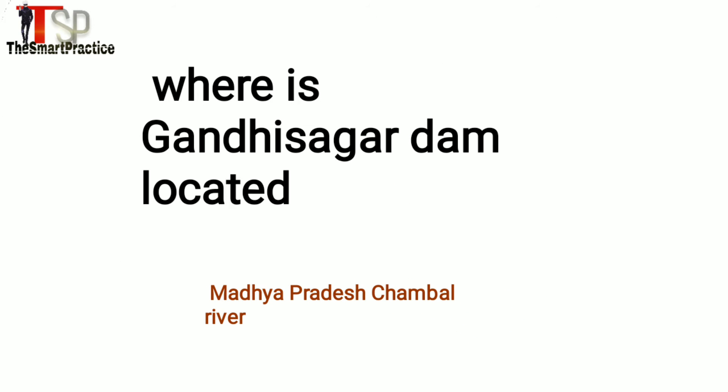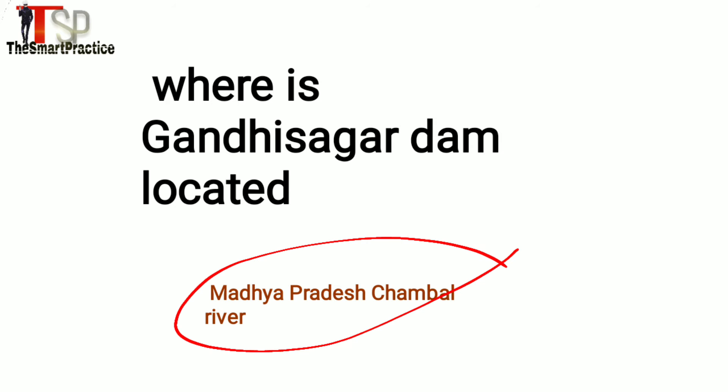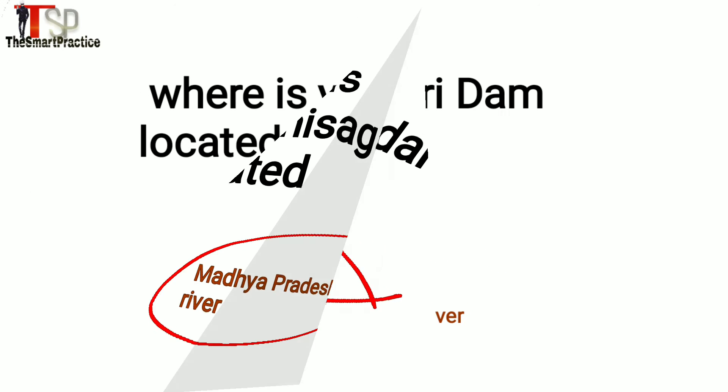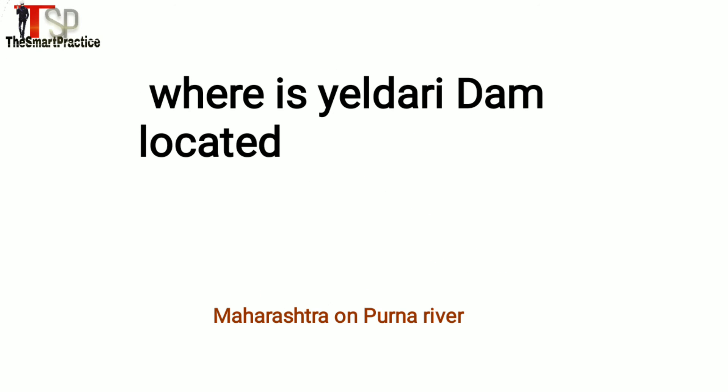Where is Kandhisagar Dam located? Madhya Pradesh, Chambal river. Where is Yeldari Dam located? Maharashtra, on Purna river.